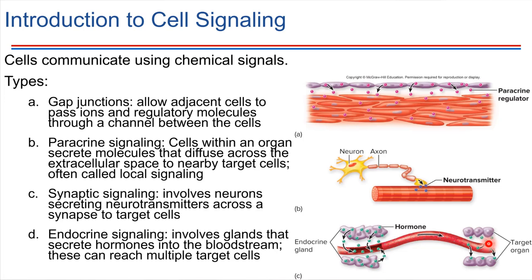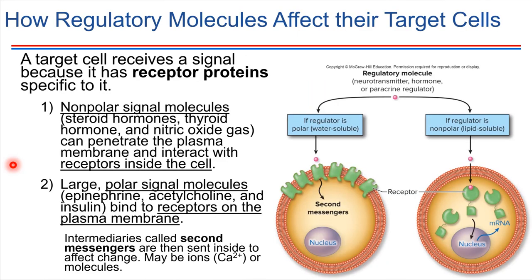A key theme across all of these is the concept of a signal being sent and another cell receiving that signal. How the signal is received by the receiving cell is often through a receptor protein. Target cells — the ones receiving the signal — have special proteins that can recognize that signal, and these are called receptor proteins.